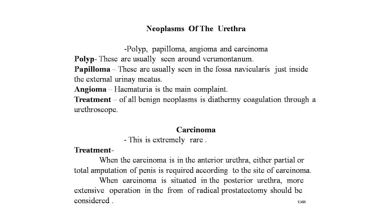The next point is neoplasms of the urethra — these are extremely uncommon. Varieties include polyp, papilloma, angioma, and carcinoma. Polyps are usually seen around the verumontanum; a few cases of congenital urethral polyp have been noticed, and otherwise these are usually associated with chronic urethritis.